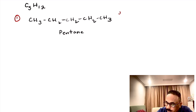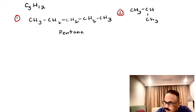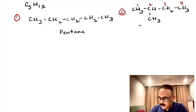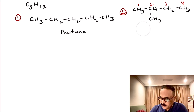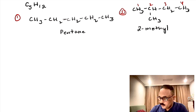Let us do number 2: CH3–CH(CH3)–CH2–CH3, with a methyl branch. Numbering the carbons 1, 2, 3, 4 — we will see that this methyl group is attached to the second carbon. So it will be 2-methylbutane, because methyl is attached to the second carbon and the longest chain is butane.